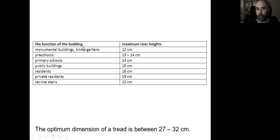So the function of the building will give idea about the people that are going to use the building. For monumental buildings or kindergartens, the maximum riser height should be 12 centimeters. For preschools, it can be 13 to 14 centimeters. Primary schools, you can do a 14-centimeter high riser. For public buildings, we can do 15 centimeters. Residents can be 16 centimeters. If we are talking about a private residence, which is in which the users are definite, there are definite users who are not sick, who are not old or young or very young, or who don't have any moving problems, then we can raise the height of riser to 19 centimeters. And the maximum height should be 22 centimeters.